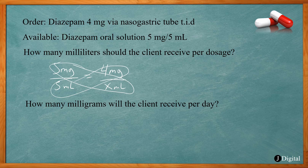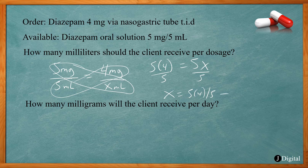Cross multiplying gives 5 times 4 equals 5 times x, so x equals 5 times 4 divided by 5, which gives 4. We need 4 milliliters per dose. Since the client is getting this three times a day, 4 milligrams times 3 gives a total daily dose of 12 milligrams.